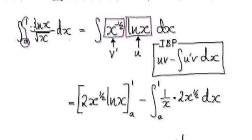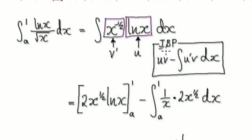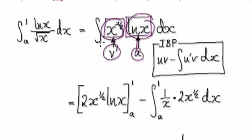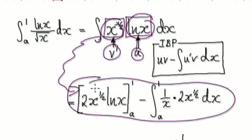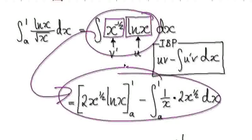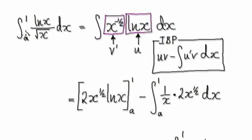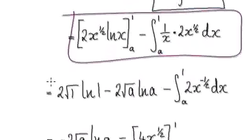Now it's just a matter of integrating this. Rewrite it as one thing multiplying another thing — we've got to use integration by parts. Allow one part to be v-prime and the other to be u, and it will then give you this. We've done this many times, so you should be able to get from here to here using integration by parts.